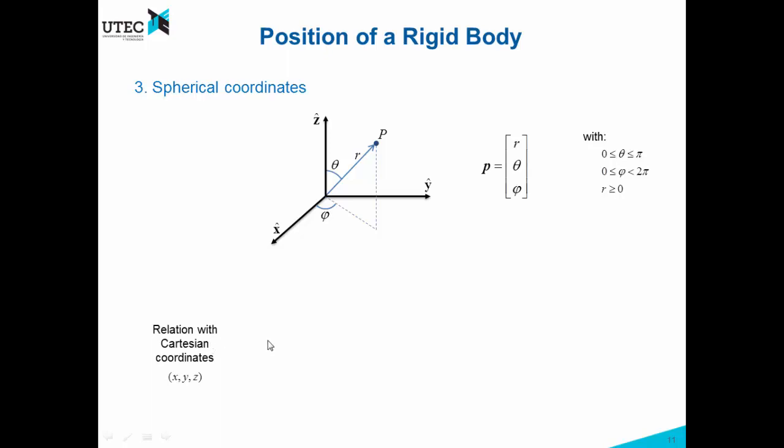The relation with Cartesian coordinates can be again obtained in a geometric way, and we get this relation. This is from the spherical coordinates to Cartesian coordinates, and these equations go from Cartesian to spherical coordinates.